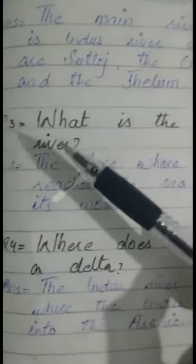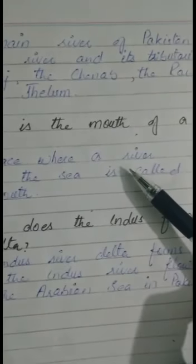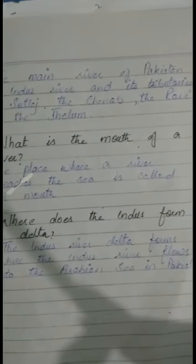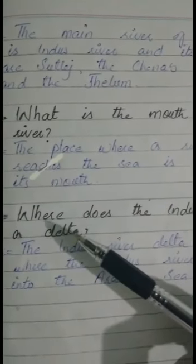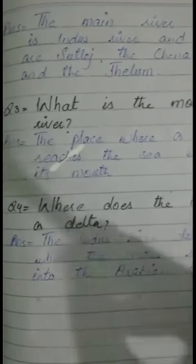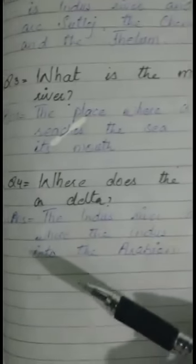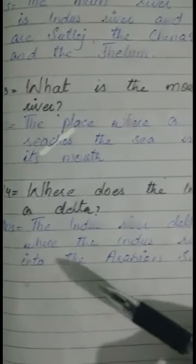Question number 3 is: what is the mouth of a river? The answer is: the place where a river meets the sea is called its mouth. Our fourth and last question is: where does the Indus form a delta? The answer is: the Indus river delta forms where the Indus river flows into the Arabian Sea in Pakistan.